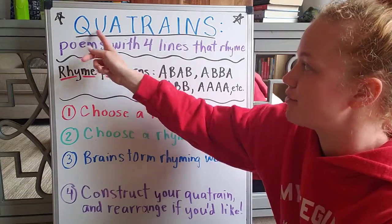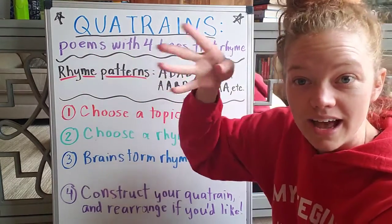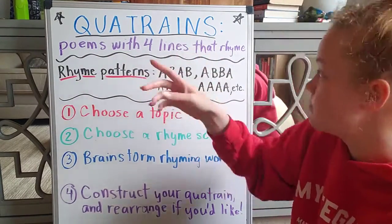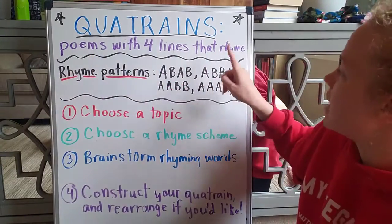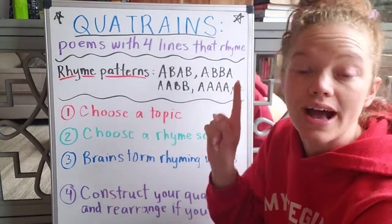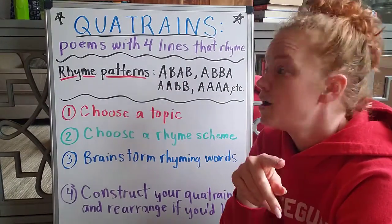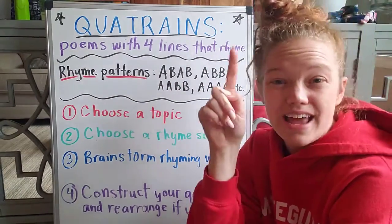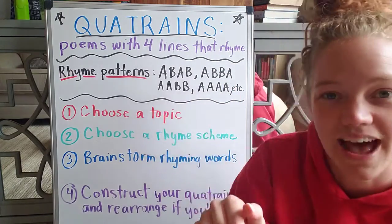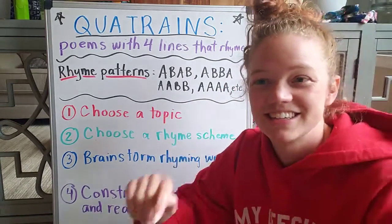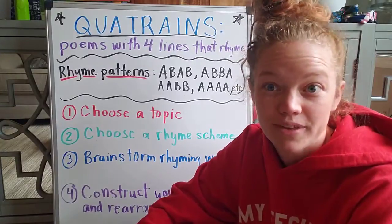So a quatrain, coming from a base meaning four, has four lines of poetry. It's a poem with four lines that rhymes — there has to be some sort of rhyme in there. If it was just A, B, C, D — not a quatrain. Each line end cannot fail to rhyme with at least one other.